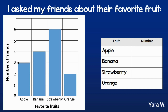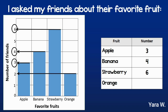I'm going to extend the line to the side and I'll find that apples are liked by three people. I'll also extend the line from the banana bar and find that four people like bananas. I'll extend the line from the strawberry bar and find that six like it, and extending from the orange bar I'll find that two people like oranges.